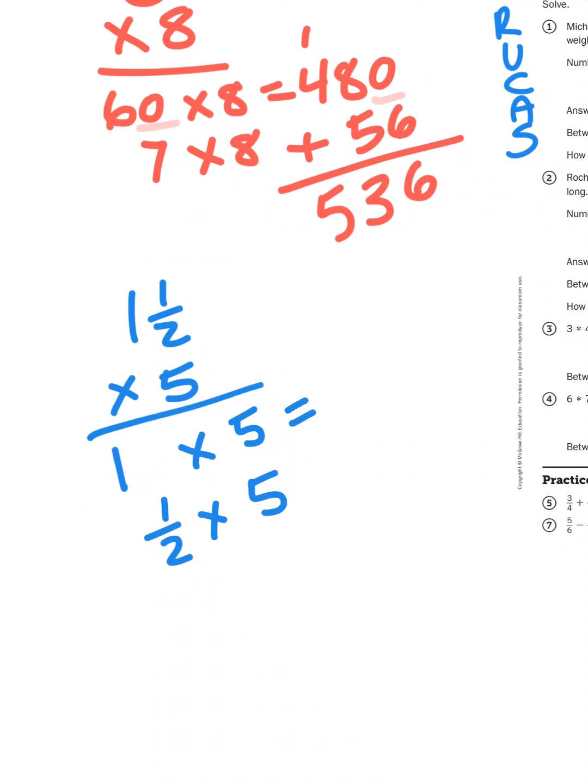Now, one times five is, of course, five. One half times five, as we learned in the last couple of lessons, is going to be five halves. Because when we multiply a fraction times a whole number, all we're multiplying is the numerator, that top number. So one half times five gives me five halves.